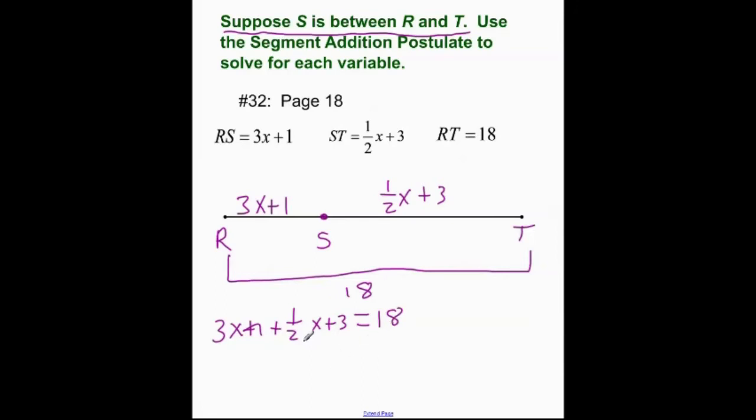We're back in algebra. Let's go ahead and combine like terms. That's a 3 and that's a 1 half so that gives me, I'm going to use decimals. 3.5x and that's a 1 and that's a 3 so that gives me plus 4 is equal to 18.